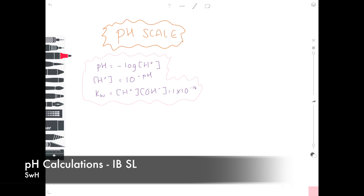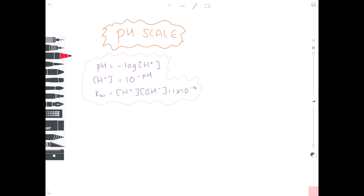Let's quickly talk about the pH scale. At GCSE you learned that the pH scale is a good way of seeing how acidic or how alkaline anything is. A pH of 7 means something is neutral — universal indicator turns green. A pH of 0 indicates huge amounts of acidity, while a pH of 14 shows it's very alkali. For example, gastric juice in your stomach has a pH of approximately 2, pure water has a neutral pH of 7, and oven cleaner is very alkali with a pH of 14.